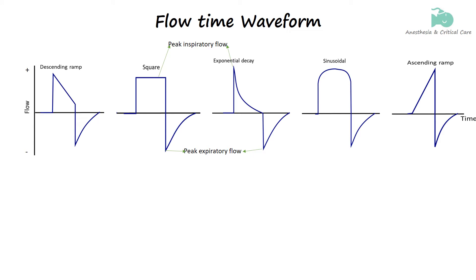Flow time waveforms in mechanical ventilation represent the flow of gas into and out of the lungs over time. Different types of flow time waveforms are associated with various modes of ventilation and patient conditions.